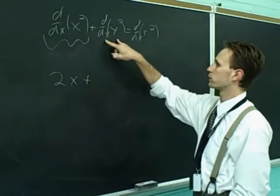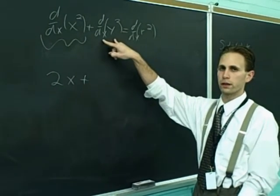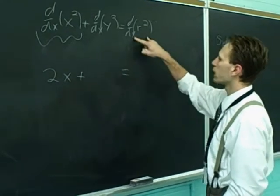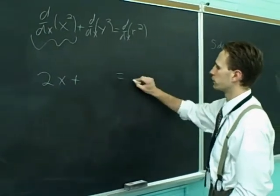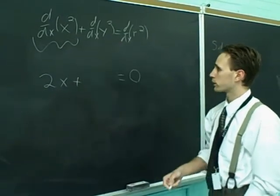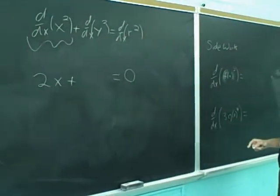This, derivative with respect to x of this is 2x, we all know and love. Plus, this is the one that's kind of weird. We haven't seen anything like that before. So I'll just kind of leave that for now. And the derivative of the constant is 0. What do you do about the derivative with respect to x of y squared?